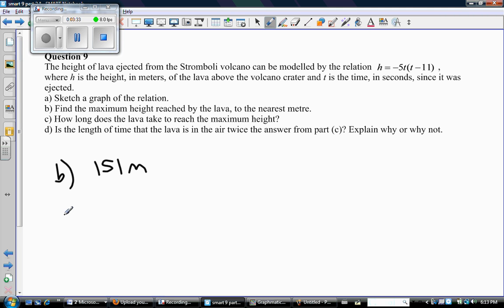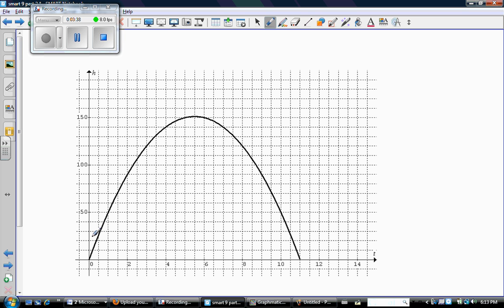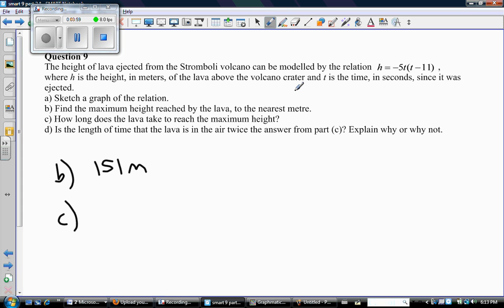C, how long does it take to reach maximum height? Well, look at your sketch. Here's a maximum height. How long does it take? Well, think about, again, that axis of symmetry. It must take 5.5 seconds. Again, you know that because you know that your vertex looks like this. So this is how long it takes to get to maximum height. So it takes 5.5 seconds.